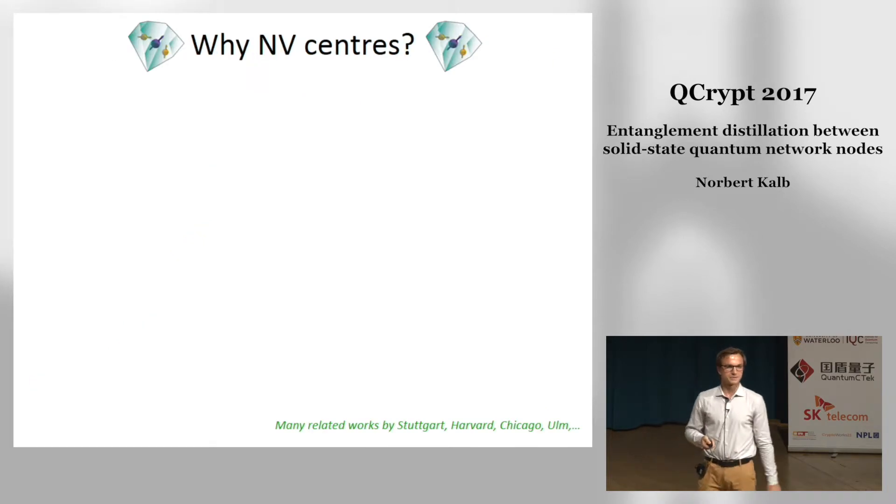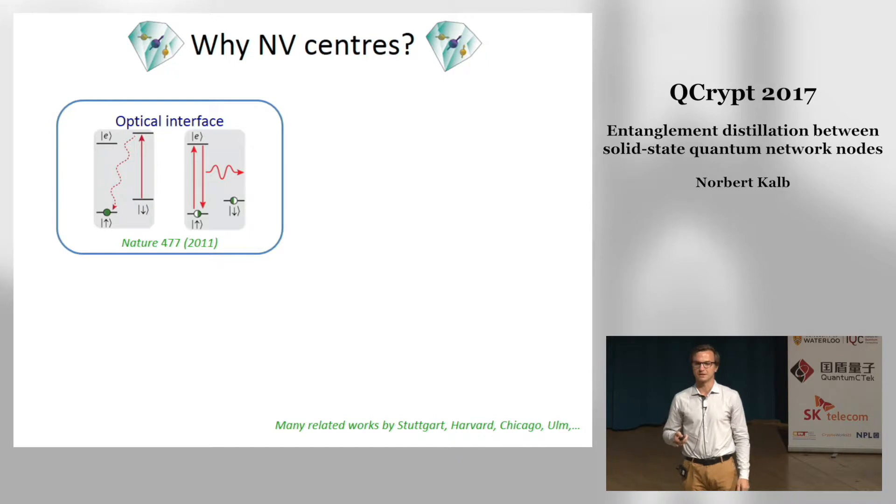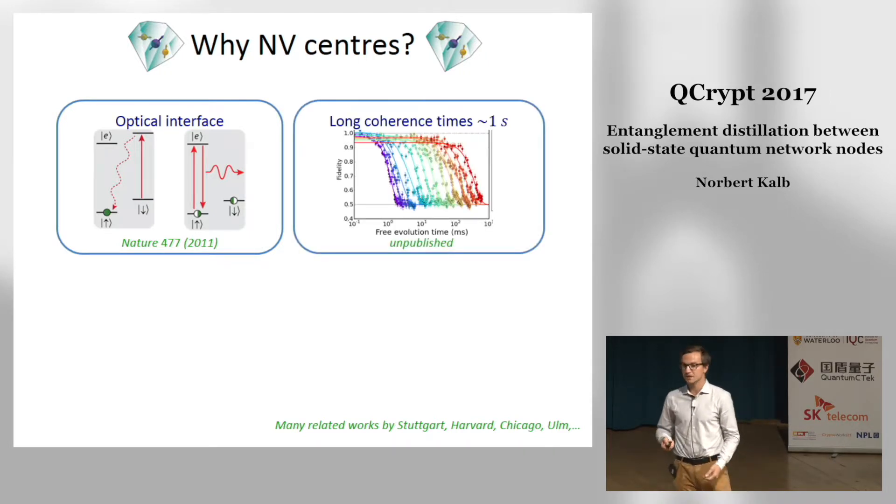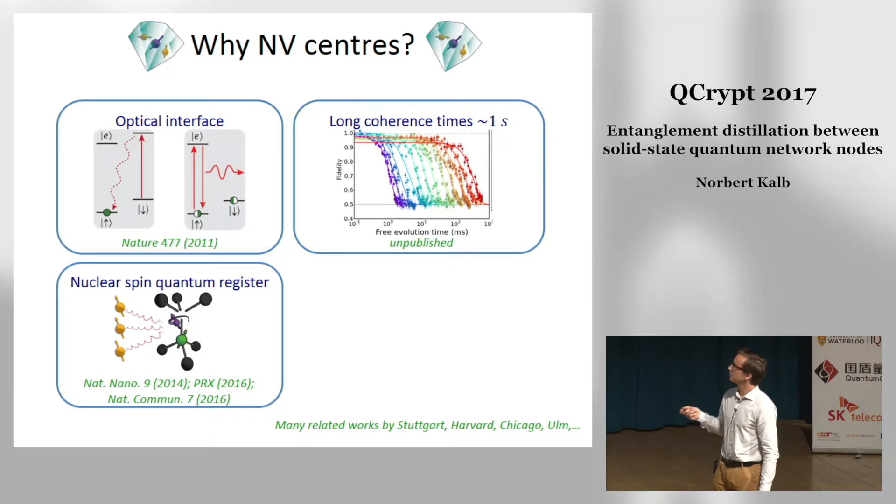These three requirements are the main reason why we bank on nitrogen vacancy centers in diamond. These are atom-like defects that are fluorescent and have advantageous properties. At low temperatures they have a spin selective optical interface with which you can polarize the spin and read it out with very high efficiency. In our devices we find coherence times of a second routinely, and an important advantage is that you get additional qubits for free. In the diamond there are additional nuclear spins surrounding the NV Center and we can use those as a resource—these will be our memories.